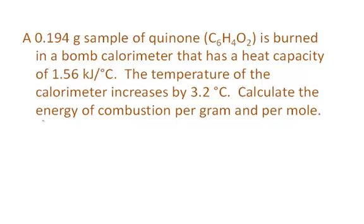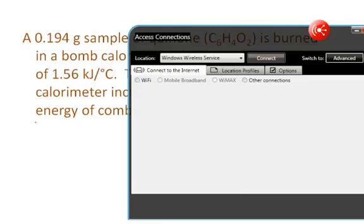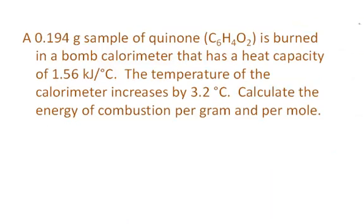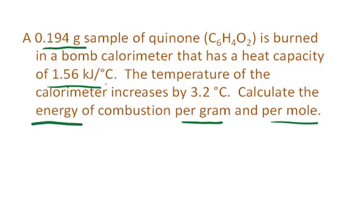Notice here we're calculating the energy of combustion. In this case, the energy is the change in internal energy, and I'm going to calculate it per gram and per mole. We're burning a 0.194 gram sample of the fuel, and the heat capacity of the bomb calorimeter is 1.56 kJ per degree Celsius.